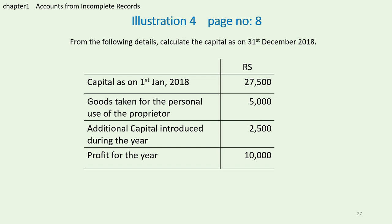Goods taken for the personal use of the proprietor is given as 5,000. Proprietor means owner — it is nothing but drawings. When a proprietor or owner of the business takes some goods or cash from the business for personal use, it is called drawings. So the drawings amount is given as 5,000. Additional capital introduced during the year is given as 2,500. Profit for the year is given as 10,000.